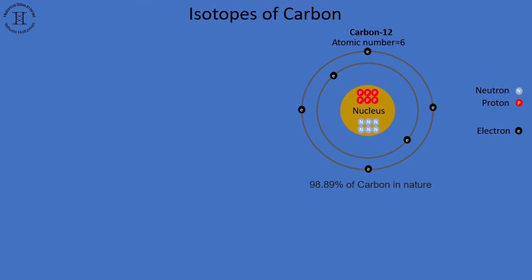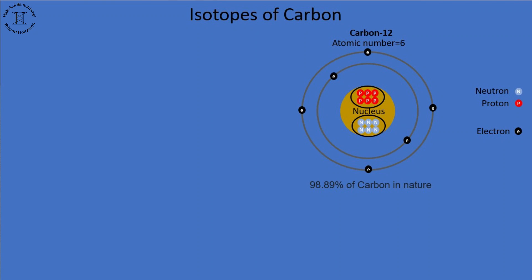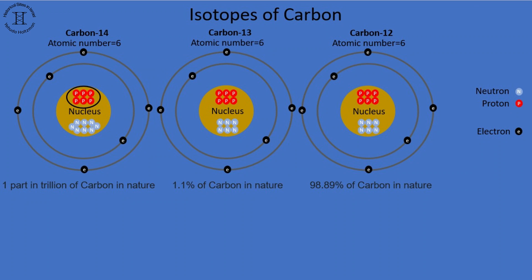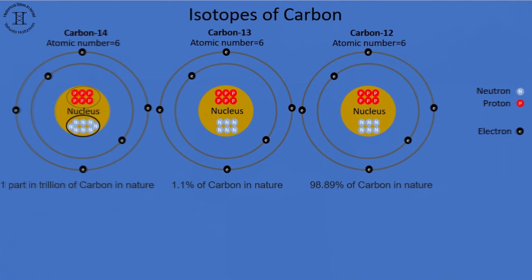An example related to our case: isotopes of carbon are carbon-12, which makes up approximately 98.9% of the carbon in nature. It has 6 protons, like all carbon, and 6 neutrons. Carbon-13, which is approximately 1.1% of the carbon in nature, has also 6 protons but 7 neutrons. And then we have carbon-14, which is 1 part in a trillion of the carbon in nature. It has 6 protons and 8 neutrons.